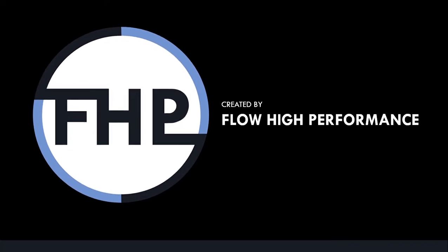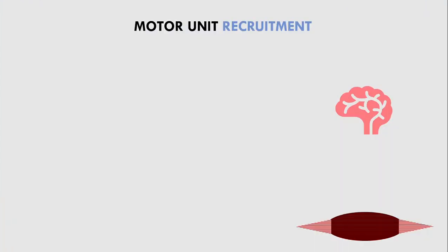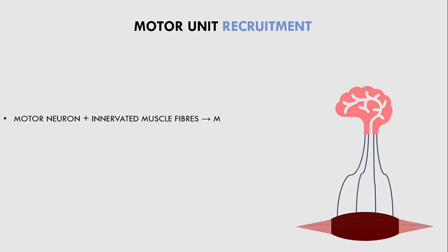First, let's establish what the principle of motor unit recruitment is. Our muscles are made up of many muscle fibers, and these muscle fibers somewhat contract independently from one another. This is because a group of fibers are innervated by a specific motor neuron, so each muscle has many motor neurons that innervate a certain number of muscle fibers. We call the motor neuron and the muscle fibers that it innervates a single motor unit.